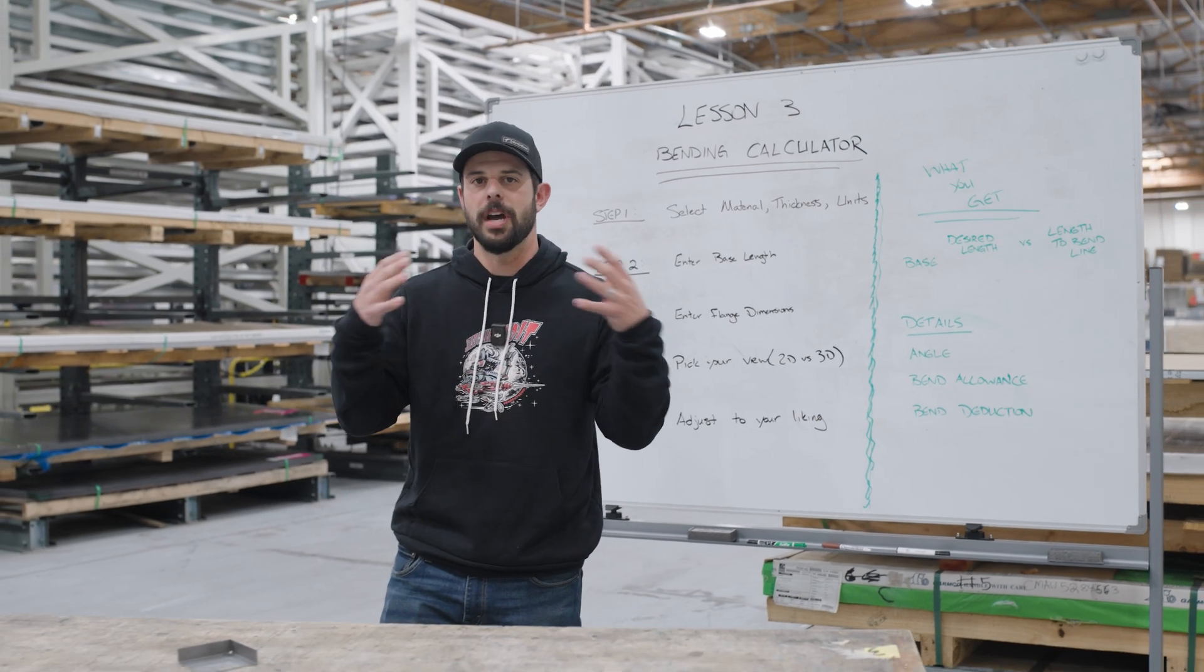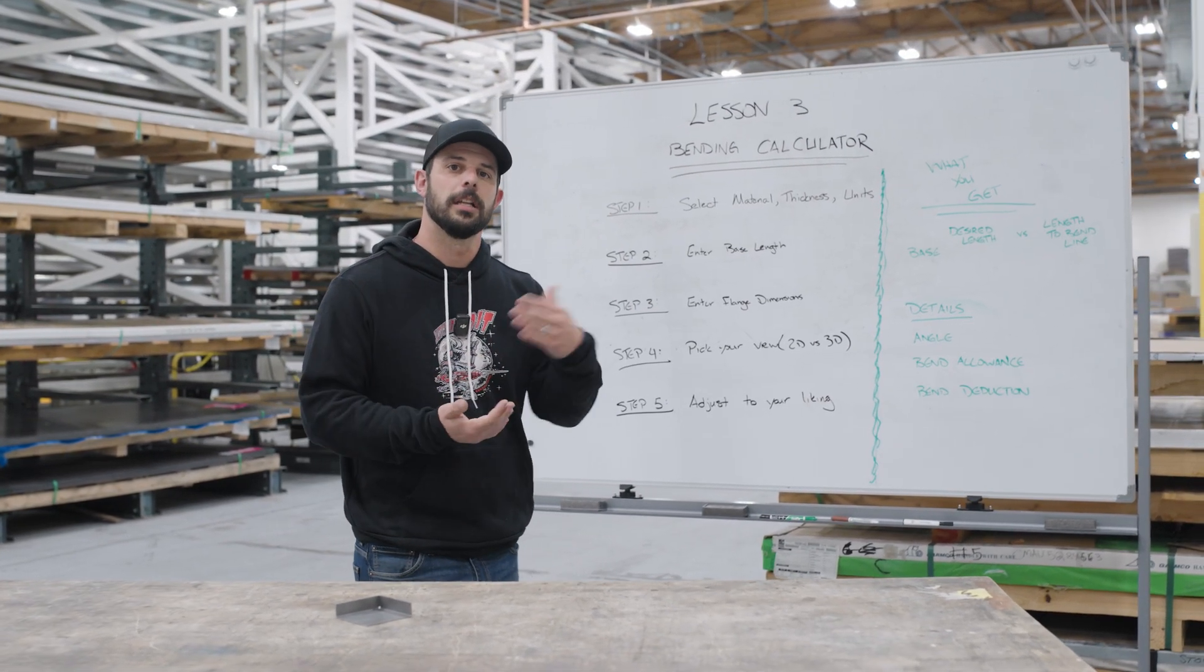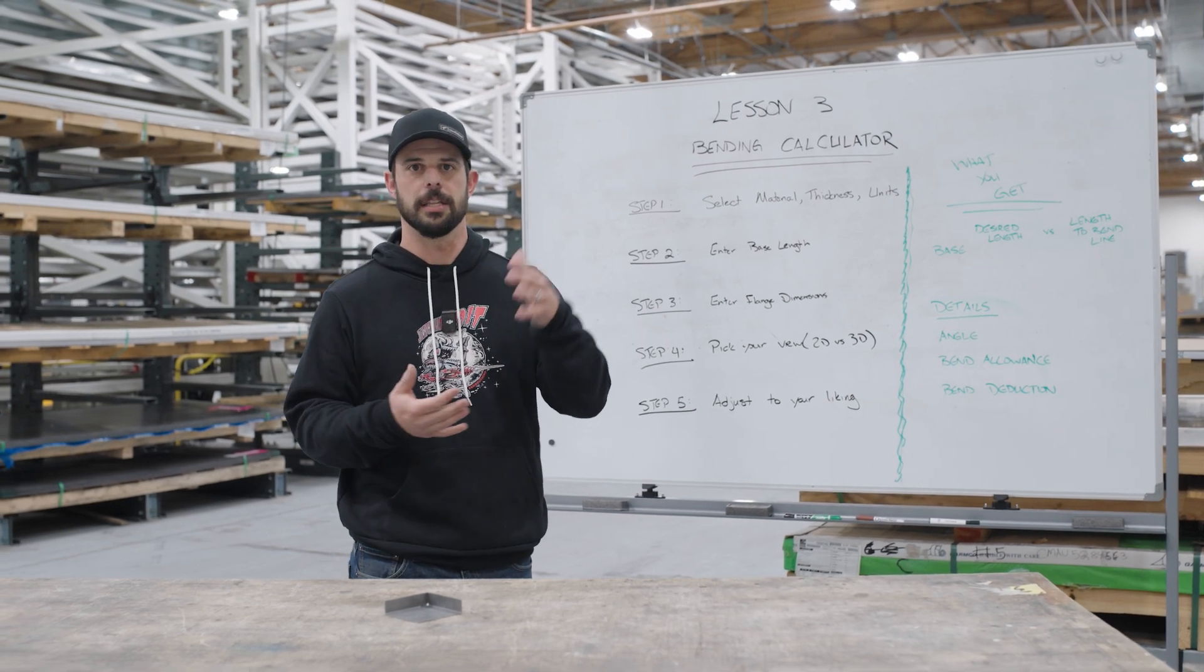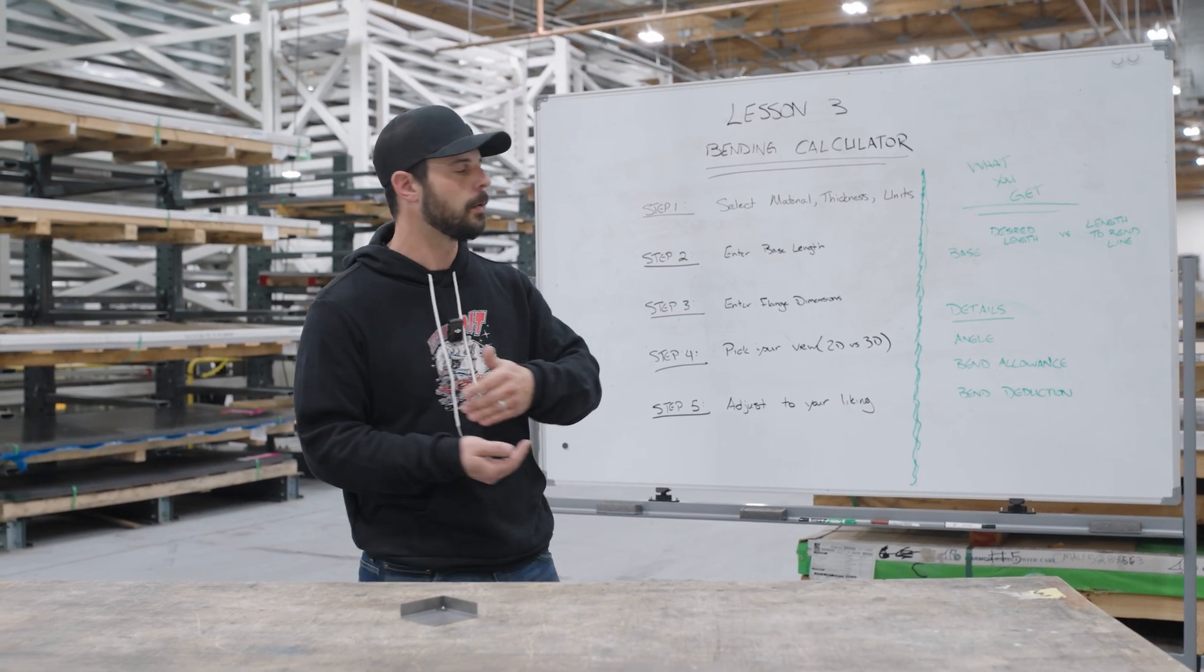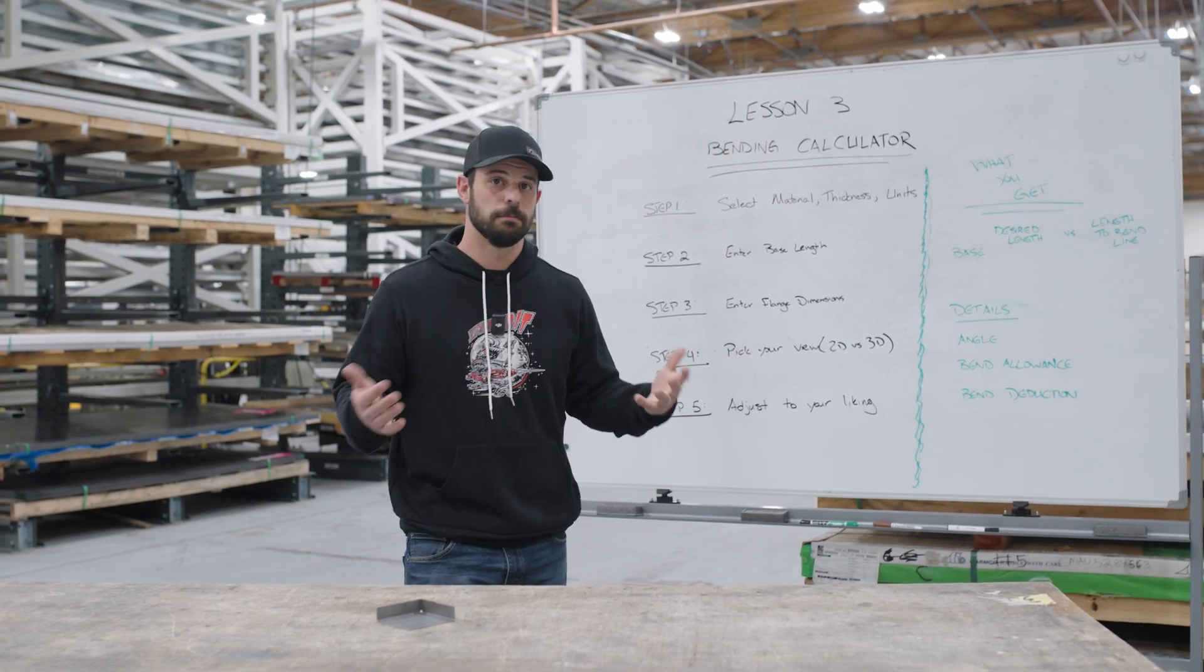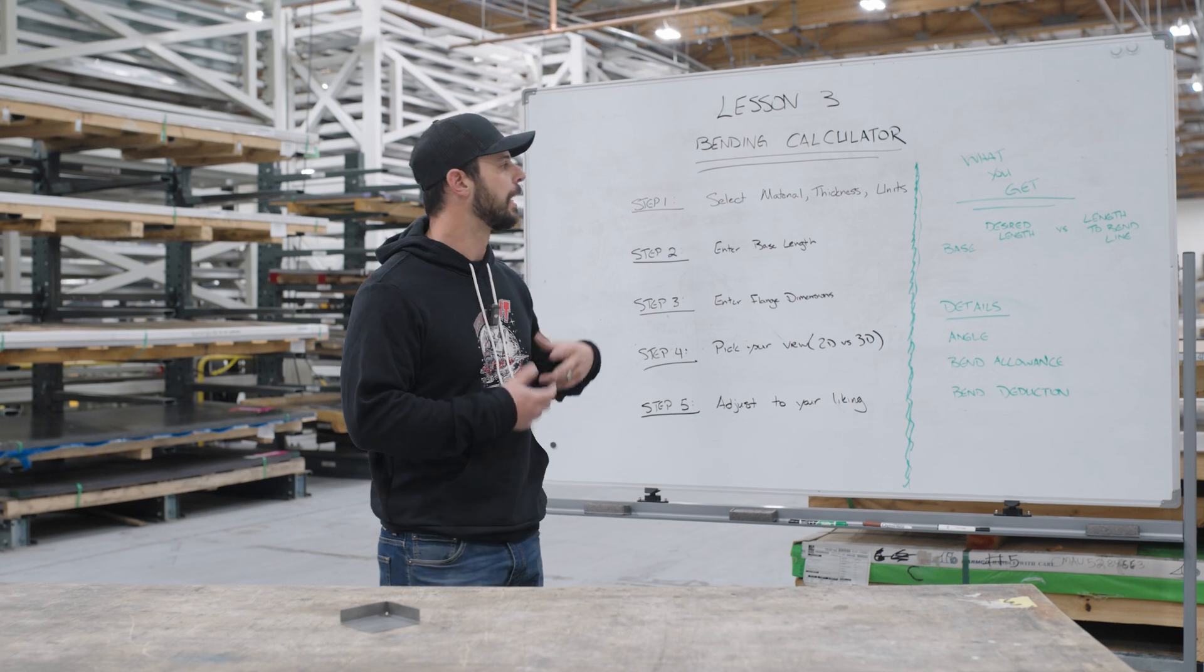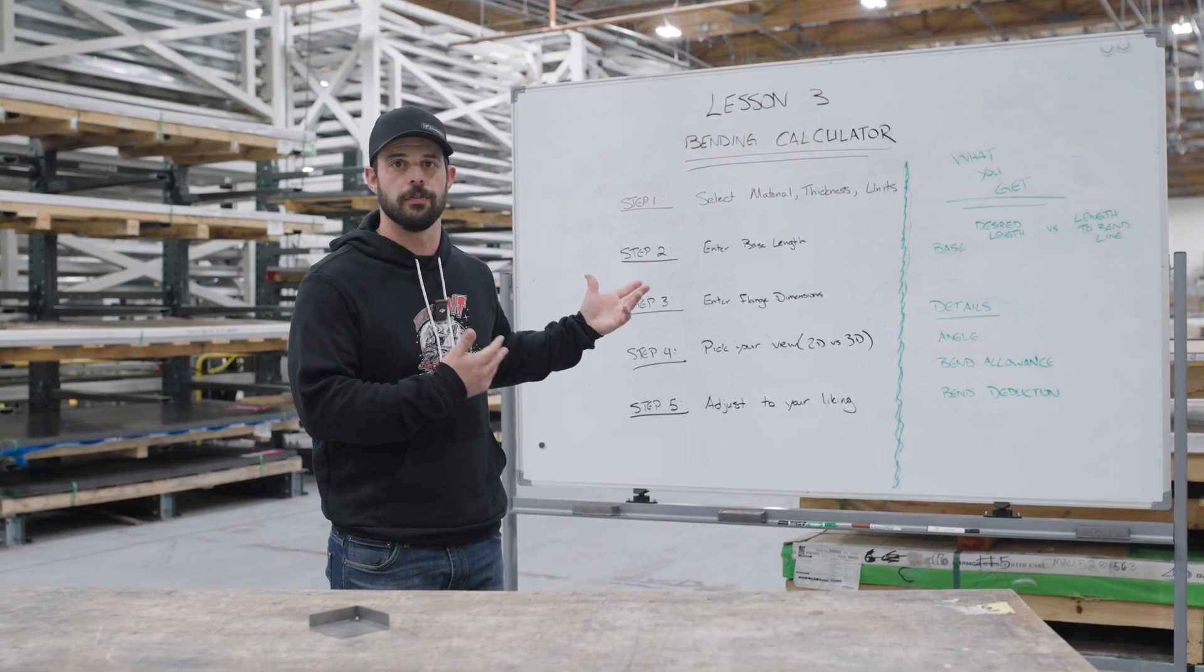So now that you have all of those in there and we've gone over lessons one and two, lesson two we went over those calculations where we calculated the bend deduction and the bend allowance. What do you get from the bend calculator that's any different? You don't. It's actually the same exact thing that we went over in lessons one and two except now this is doing the calculation for you.